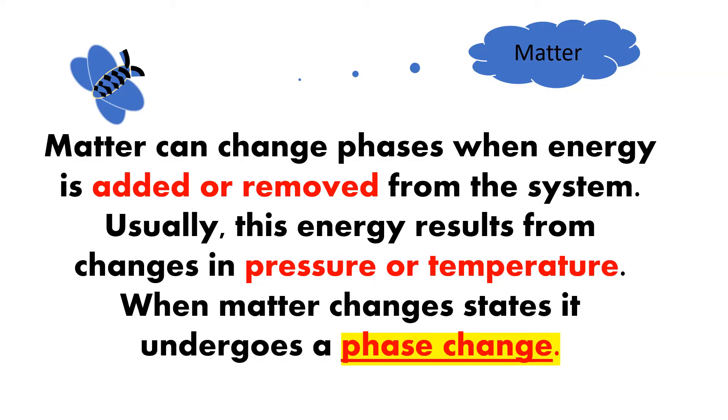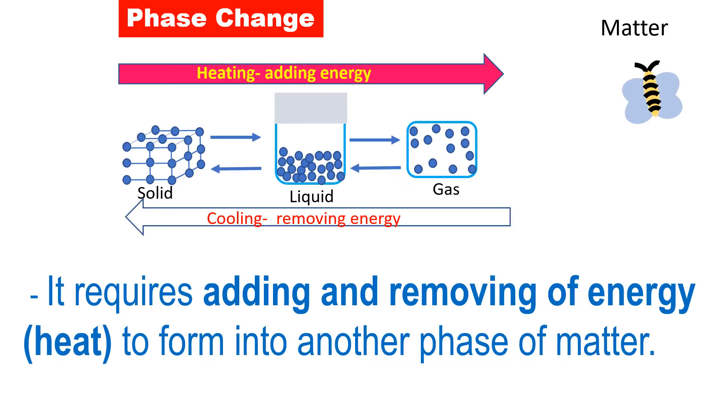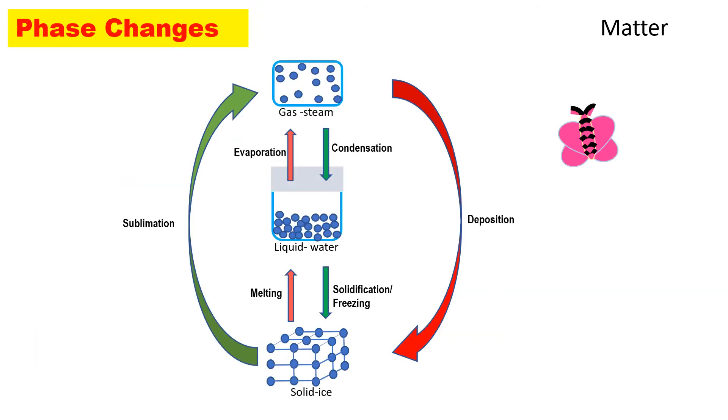Matter can change phases when energy is added or removed from the system. Usually, this energy results from changes in temperature or pressure. When matter changes its state, it undergoes a phase change. Heat plays an important role in converting one state of matter to another. Adding heat or taking off heat brings a change in the state of matter. Try to observe the diagram. This diagram shows the phase changes in water.